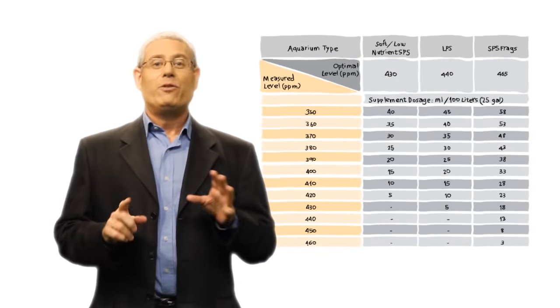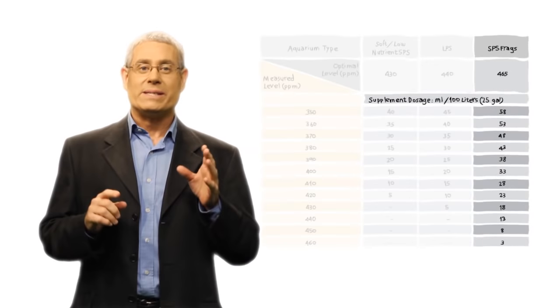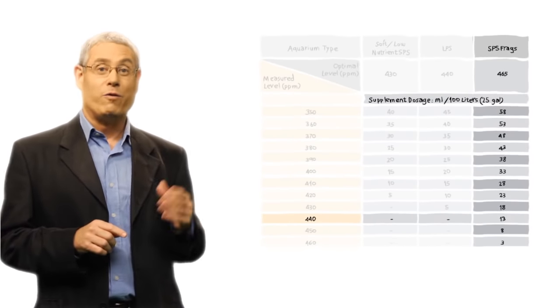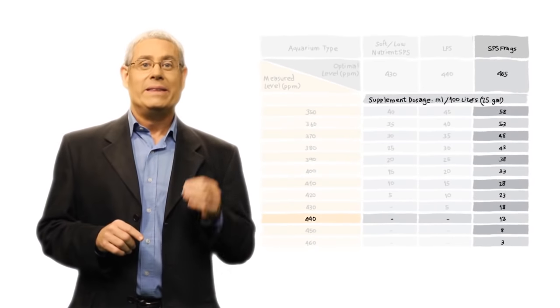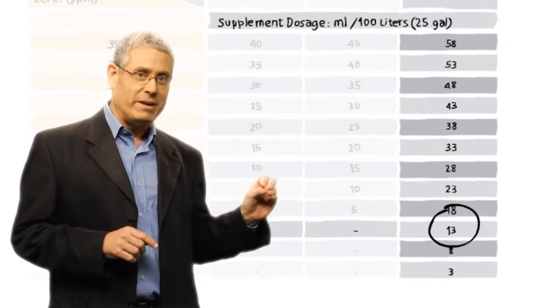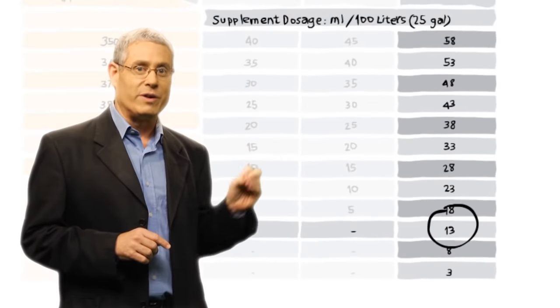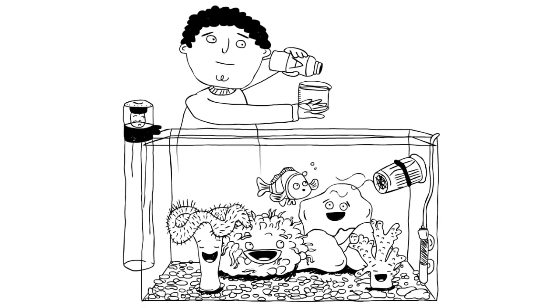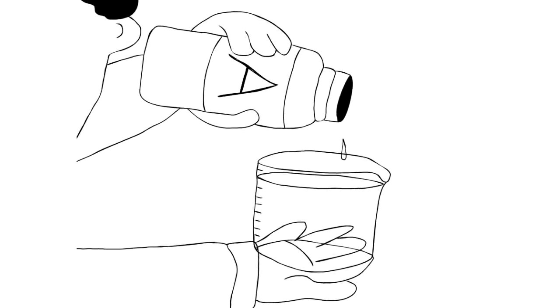So, if we have an SPS tank set for accelerated growth and our test measures a current level of, say, 440 ppm, the table shows that we need to add 13 milliliters of supplement for each 100 liters of aquarium water, which can be easily measured with the dosing cup we provide with each bottle. Simple, really.